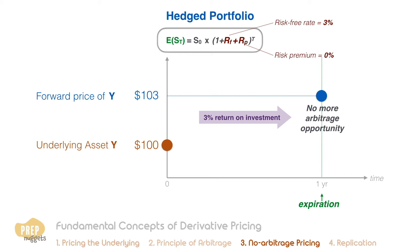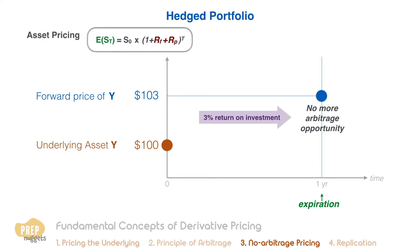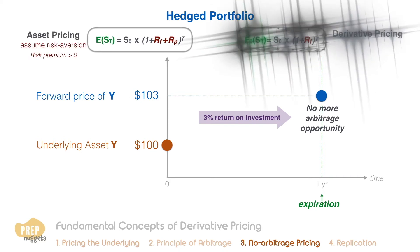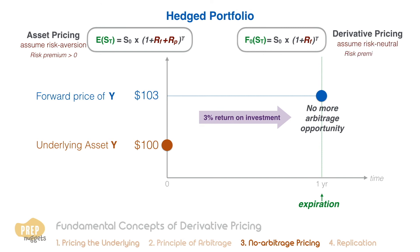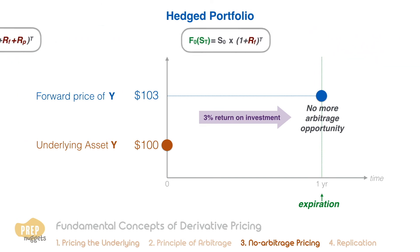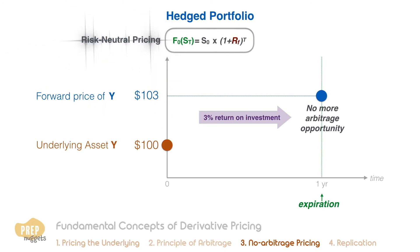The important point to understand from this illustration is that while the risk aversion of investors is relevant to pricing assets, it's not relevant to pricing derivatives. As such, derivatives pricing is sometimes called risk-neutral pricing. Based on the principles of arbitrage and risk-neutral pricing, only one price can exist for the derivative. We call this the no-arbitrage derivative price.